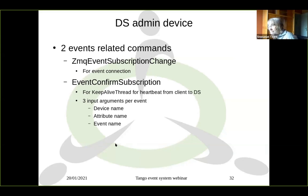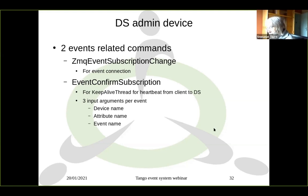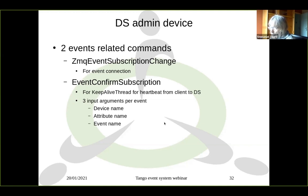On the admin device, we have two commands important for the event system: ZmqEventSubscriptionChange, which I've already described several times, and EventConfirmedSubscription, which the keep-alive thread uses to regularly resubscribe and inform the device server that someone is still interested. EventConfirmedSubscription takes an array of strings with three strings per event: the device name, attribute name, and event name.